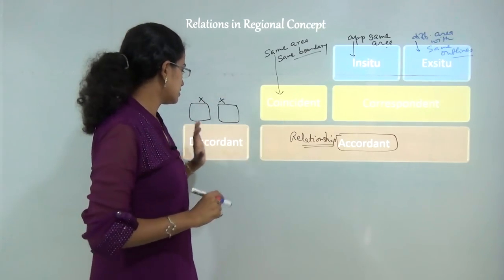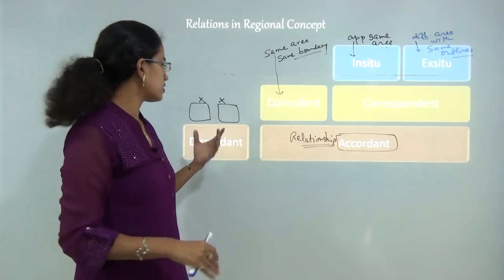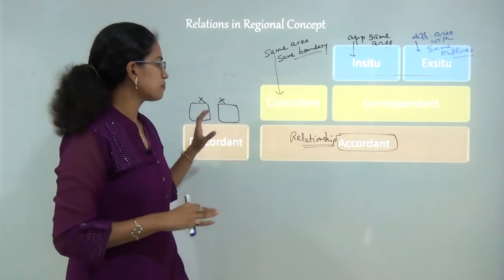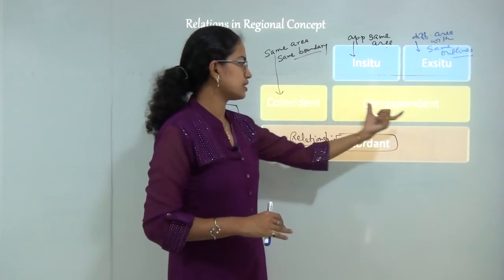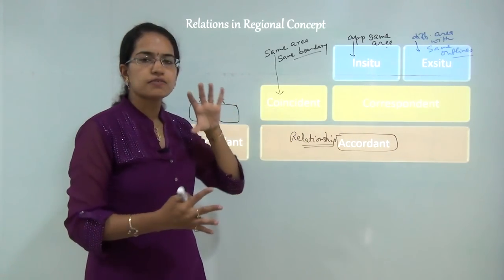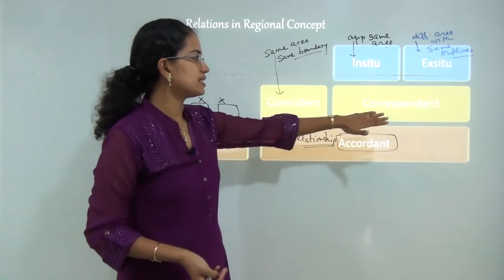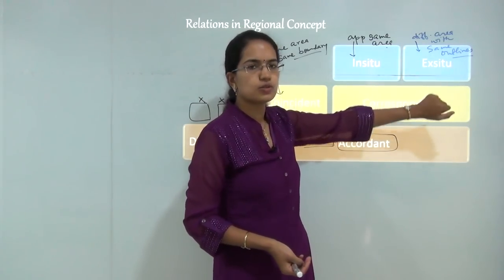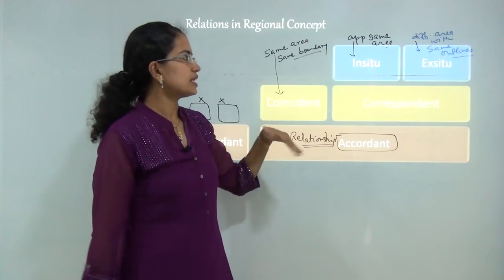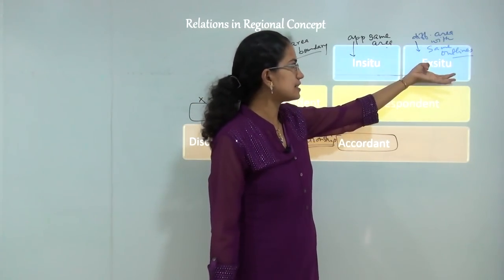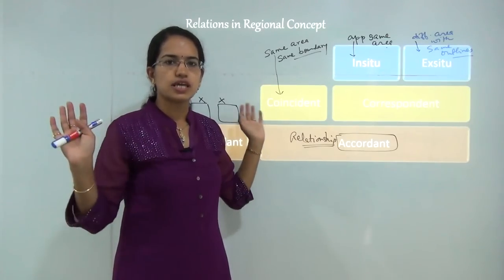To recap: discordant means regions are totally disjoint, exclusive and different. Accordant means there is a kind of relationship, which can be coincident or correspondent. Coincident means exactly the same area and exactly the same boundaries. Correspondent can be either in-situ - approximately the same area - or ex-situ - different areas but nearly the same outlines or boundaries.